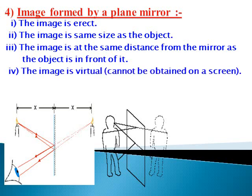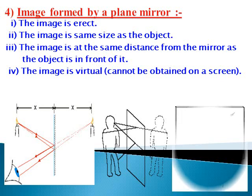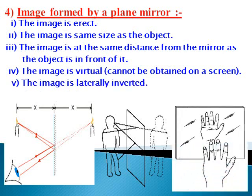The image is virtual. It means the image cannot be obtained on a screen. And the image is laterally inverted. It means an image formed by a mirror, the left of the object appears on the right and the right appears on the left. This is called lateral inversion.